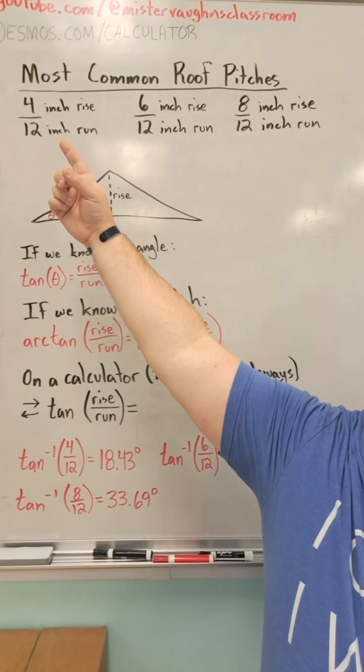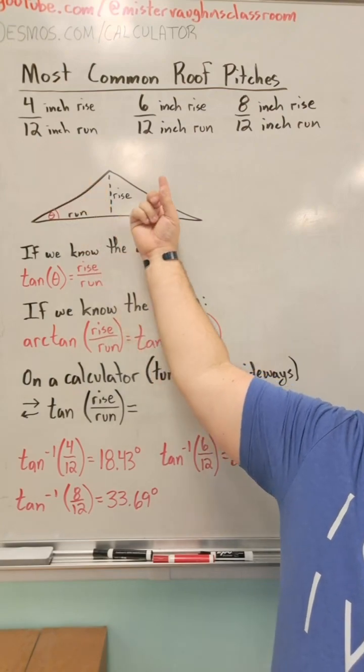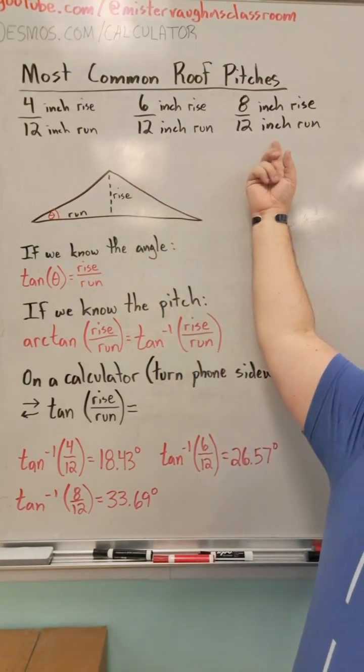The most common are 4 inches of rise for every 12 inches of run, 6 inches of rise for every 12 inches of run, or 8 inches of rise for every 12 inches of run.